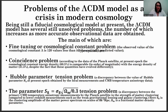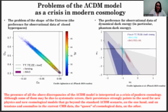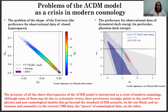The main problems are: the fine-tuning or cosmological constant problem, the coincidence problem, the Hubble parameter tension problem, the S8 parameter tension problem. Moreover, there are also the problem of the shape of the universe — to be precise, the preference of observational data for closed hyperspaces — and the preference of observational data for dynamical dark energy, in particular phantom dark energy.